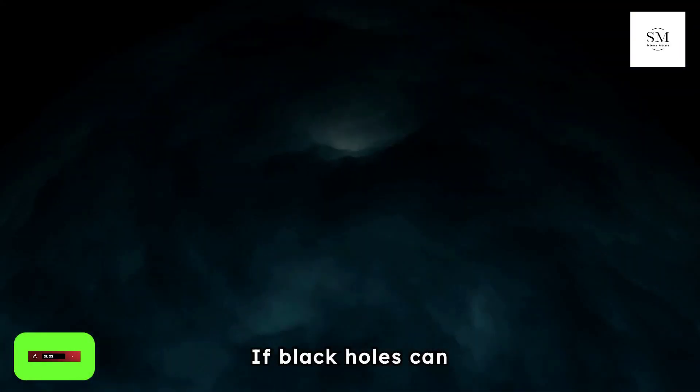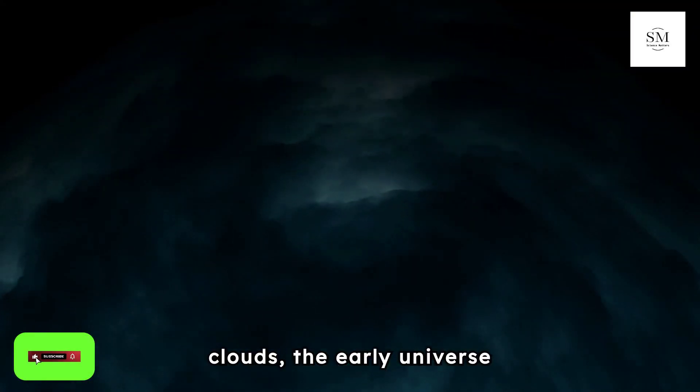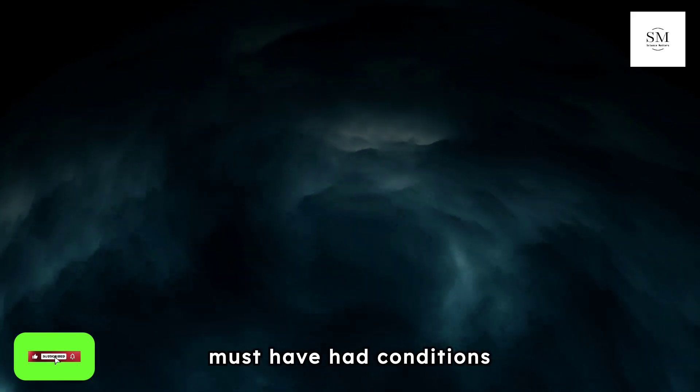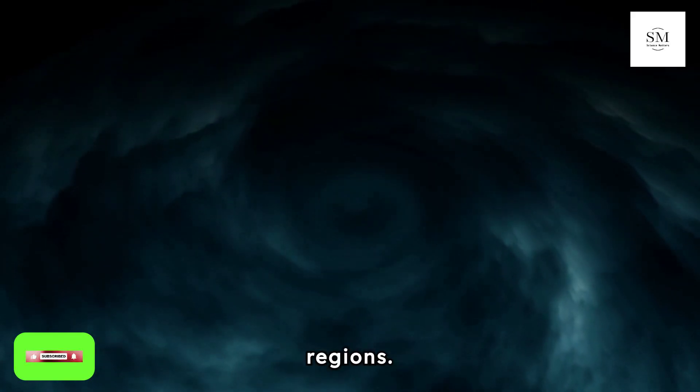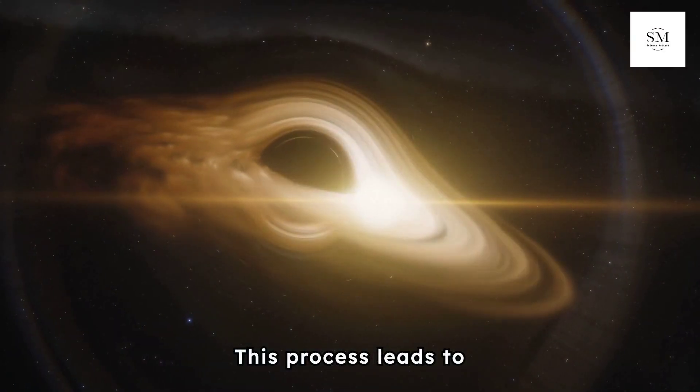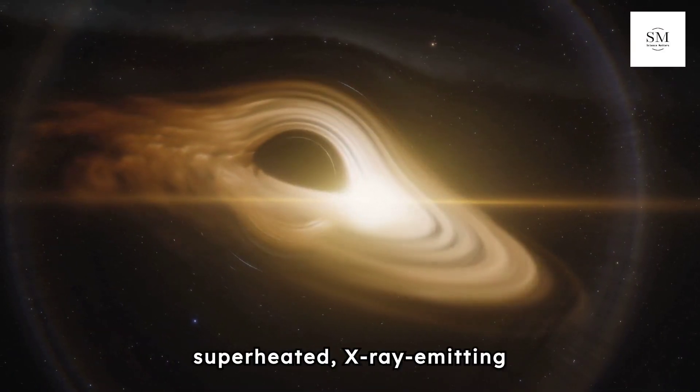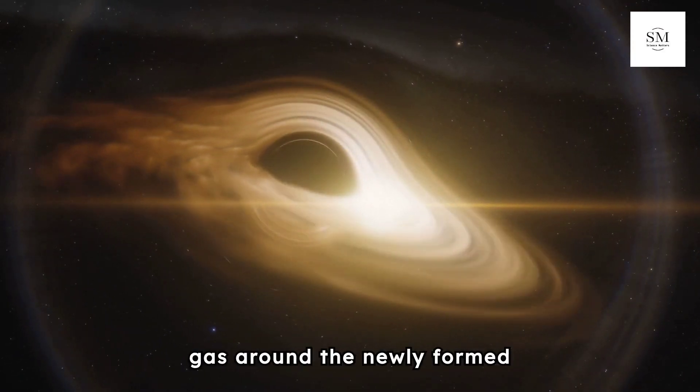If black holes can form directly from gas clouds, the early universe must have had conditions conducive to the rapid accumulation of matter in dense regions. This process leads to the creation of superheated, X-ray-emitting gas around the newly formed black hole.